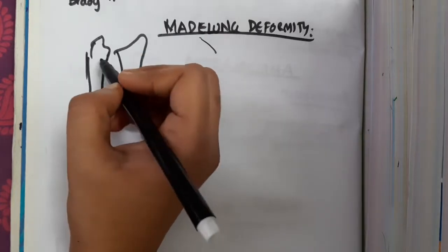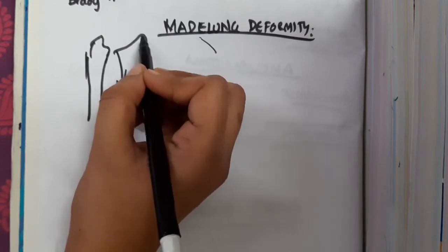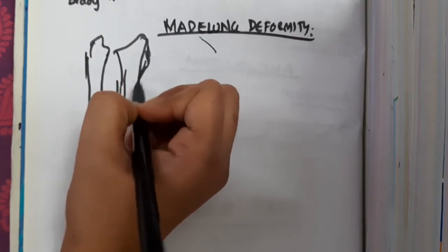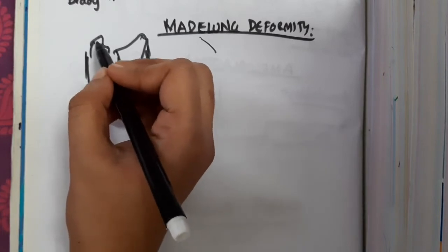So here, number one, there will be anterior bowing of the radius. Sometimes the radius will bow like this, and there will also be subluxation of the ulna.